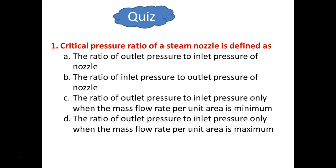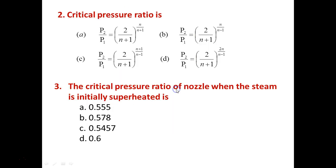Quiz on critical pressure ratio: the critical pressure ratio is defined as the ratio of outlet pressure to inlet pressure only when the mass flow rate per unit area is maximum — answer D is correct. The formula for P₂/P₁ is (2/(n+1))^(n/(n−1)) — answer B. For superheated steam with n = 1.3, substituting gives P₂/P₁ = 0.5457, which is the correct answer.